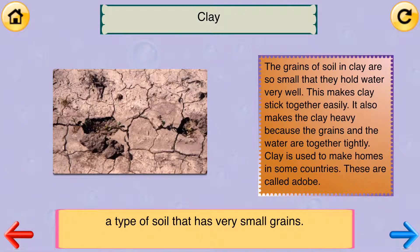Clay: A type of soil that has very small grains. The grains of soil in clay are so small that they hold water very well, which makes clay stick together easily. It also makes the clay heavy because the grains and water are together tightly. Clay is used to make homes in some countries, and these are called adobe.